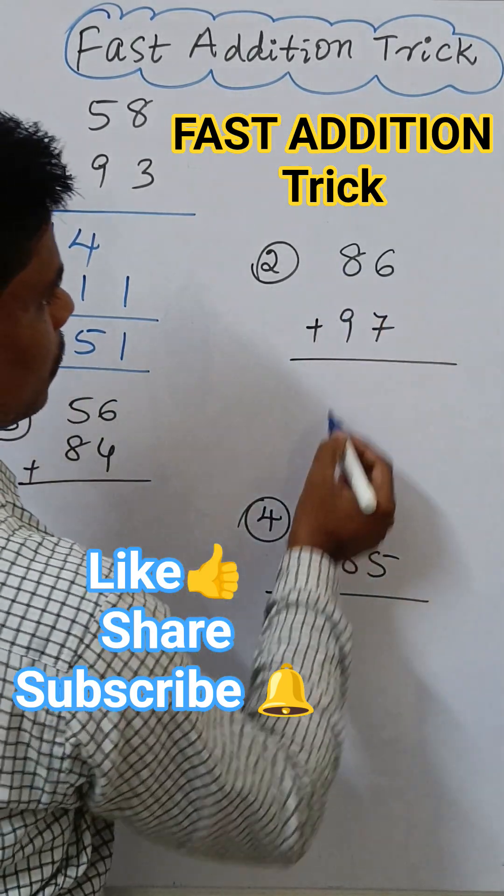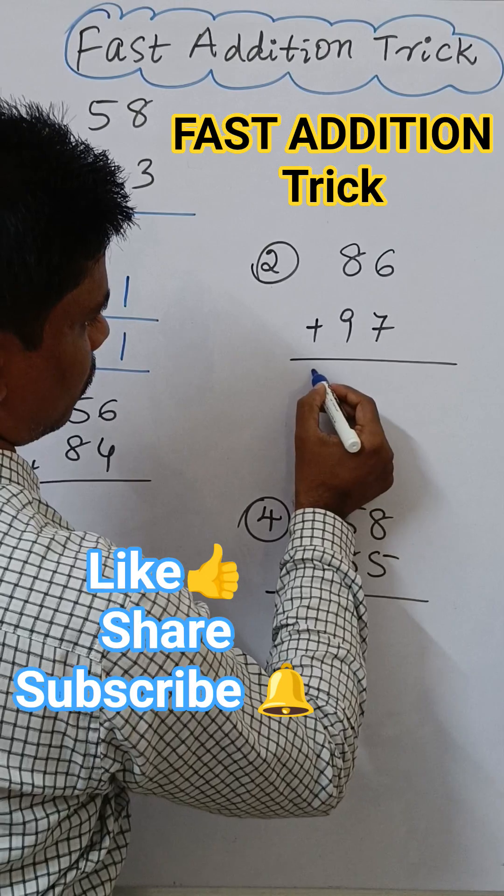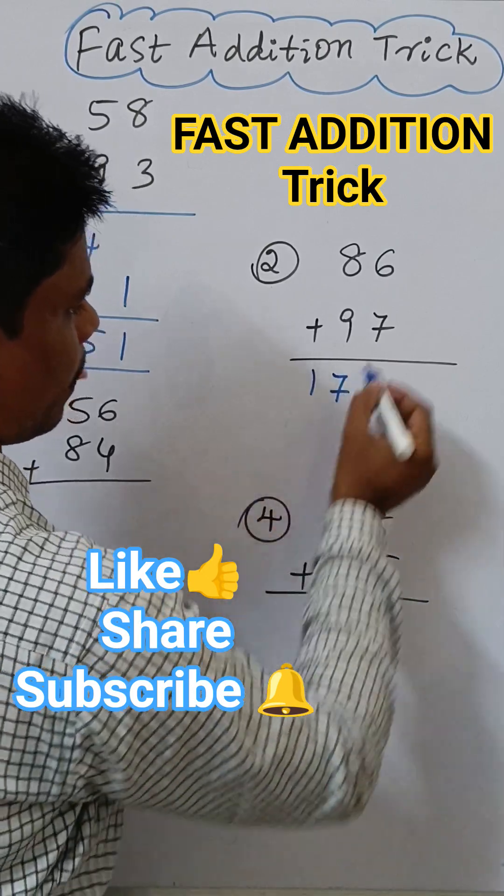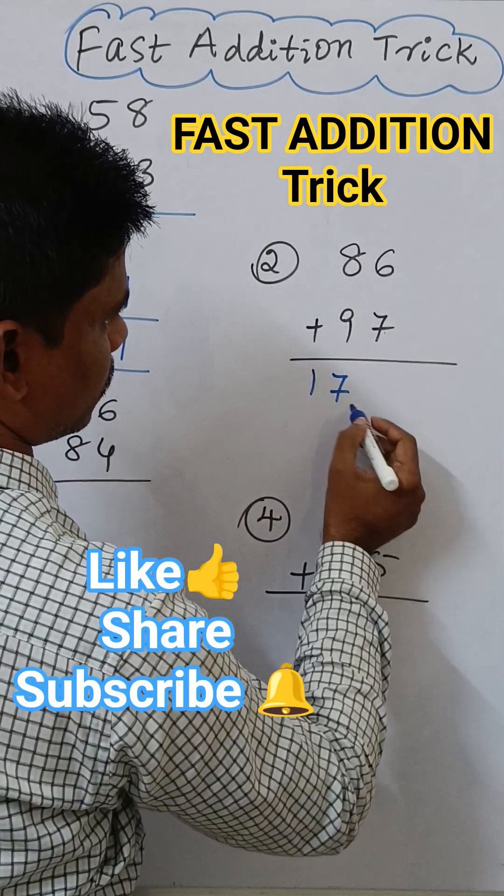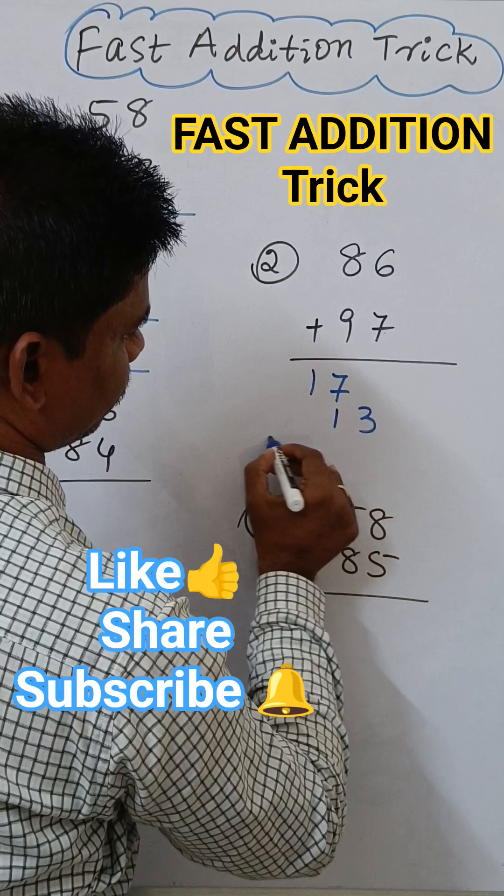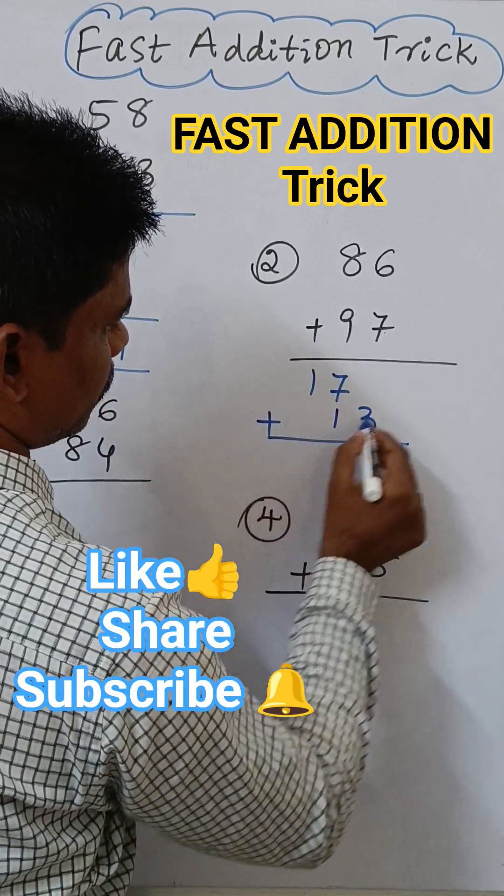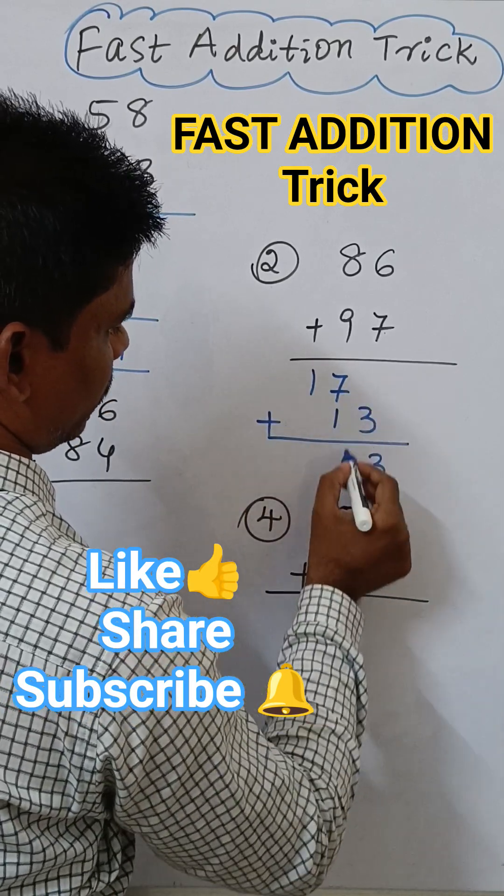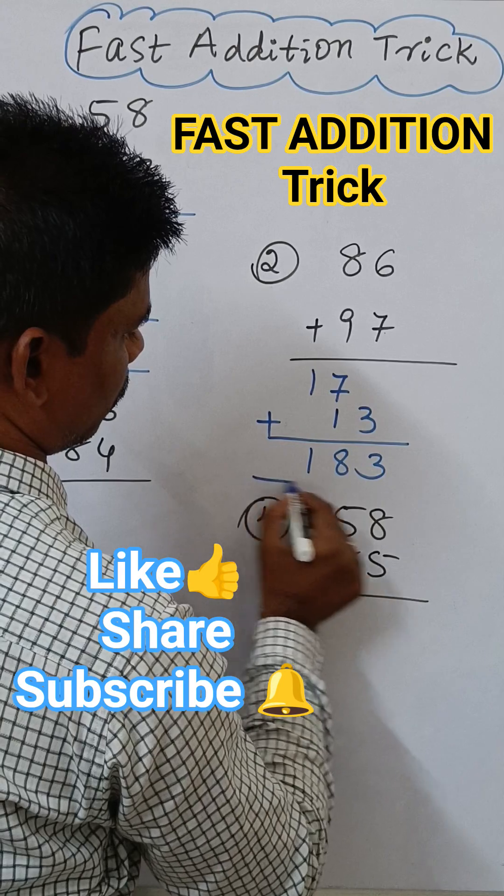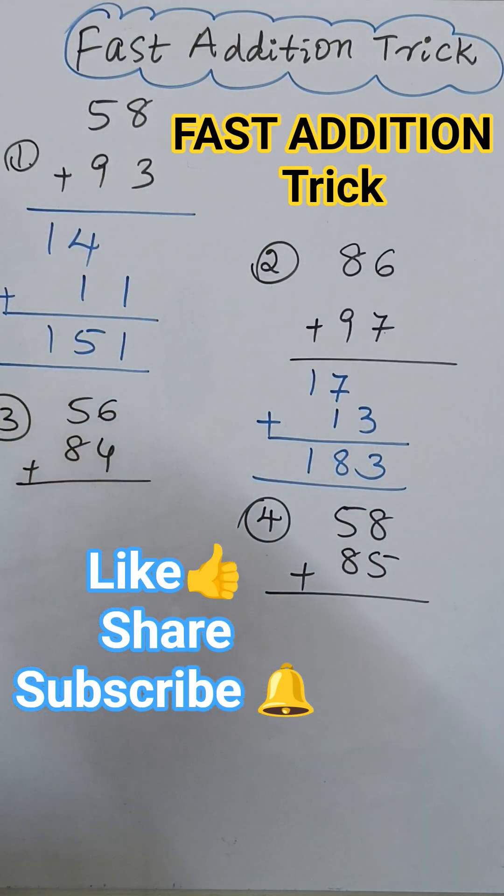Similarly, second one. 8 plus 9, 17. 7 plus 6, 13. And then add, this is 3. 7 plus 1, 8, 1. 183 is the answer.